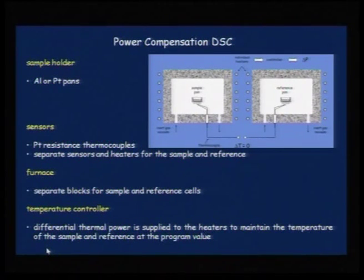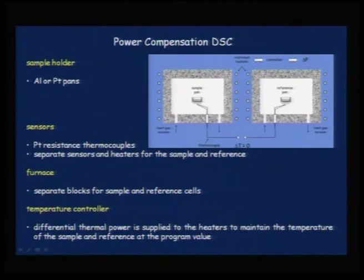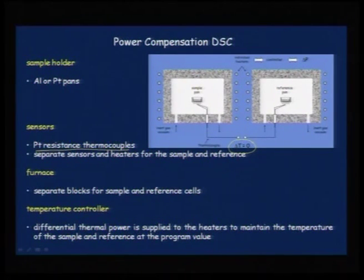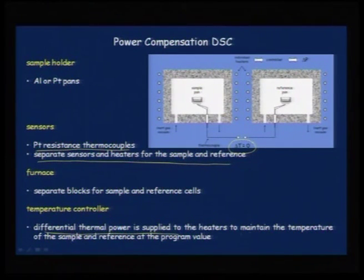There are two ways to achieve DSC: using a power compensation method or a heat flux method. In the power compensation method, you have two different alumina blocks to heat the pans — one for the sample and one for the reference — connected to thermocouples where delta T is maintained at zero. Separate sensors and heaters are used, and differential thermal power is supplied to the heaters to maintain the temperature of sample and reference at the programmed value.